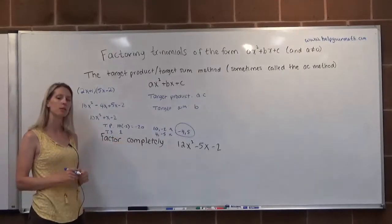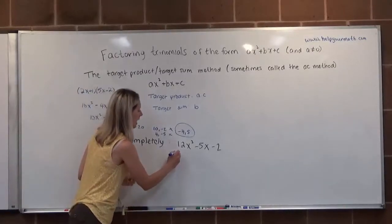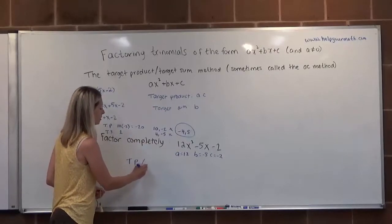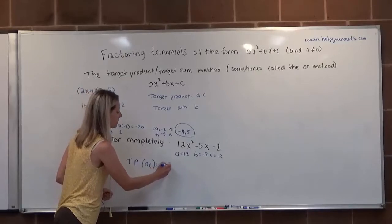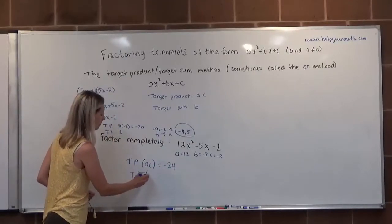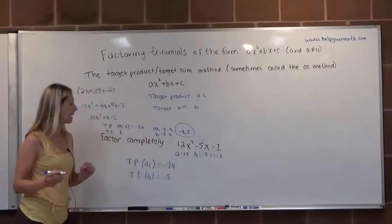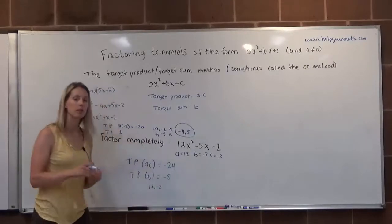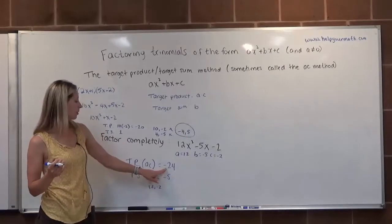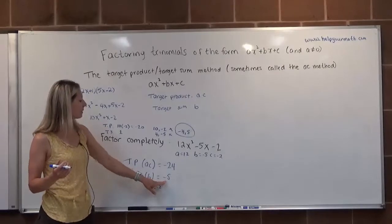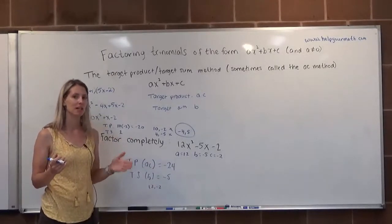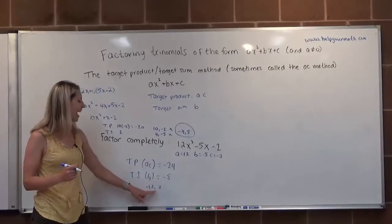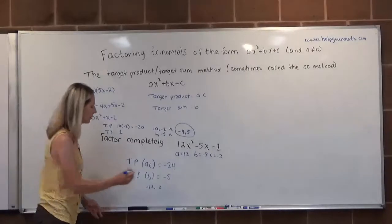Let's try example A: 12x squared minus 5x minus 2. Here A is 12, B is negative 5, and C is negative 2. The target product is A times C: 12 times negative 2 equals negative 24. The target sum is B: negative 5. Since the sum is negative, the bigger number must be negative. Checking 12 and negative 2: negative 12 and 2 don't add to negative 5. Trying negative 6 and 4: that adds to negative 2, not negative 5.